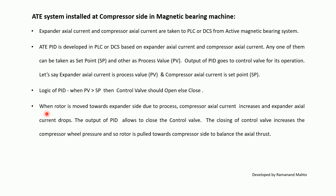When the rotor moves towards the expander side due to process conditions, compressor axial current increases and expander axial current drops. The output of the PID allows the control valve to close. Closing the control valve increases the compressor wheel pressure, so the rotor is pulled towards the compressor side to balance the axial thrust.